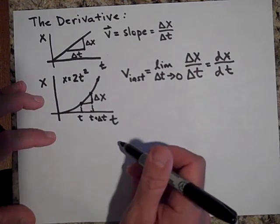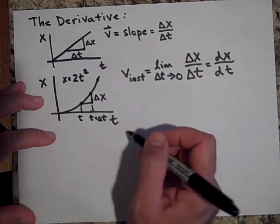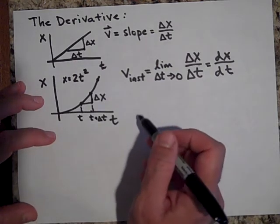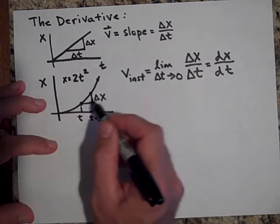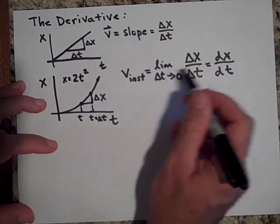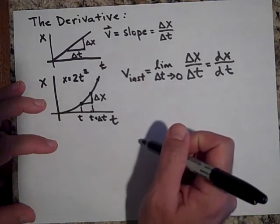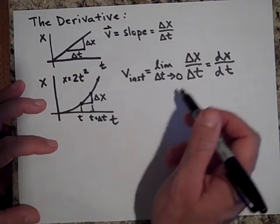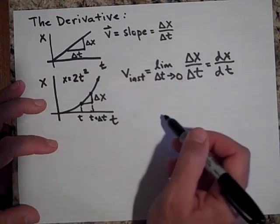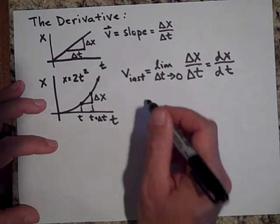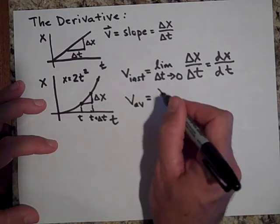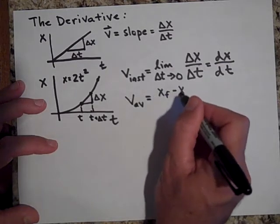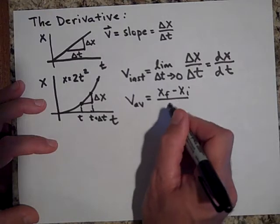Okay, so how would I actually get the velocity? How would I actually get this derivative then? How would I actually do this limit? Well, let me put in, since delta x over delta t is going to be v average, we're back to v average, is equal to x final minus x initial over delta t.